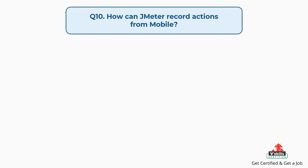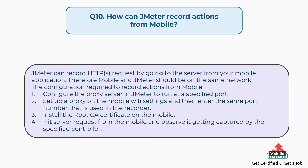Question 10: How can JMeter record actions from mobile? JMeter can record HTTP/S requests from your mobile application; mobile and JMeter should be on the same network. Steps: first, configure the proxy server in JMeter to run at a specified port; second, set up a proxy on the mobile Wi-Fi settings with the same port used in the recorder; third, install the root CA certificate on the mobile; fourth, hit server requests from the mobile and observe them getting captured by the specified controller.